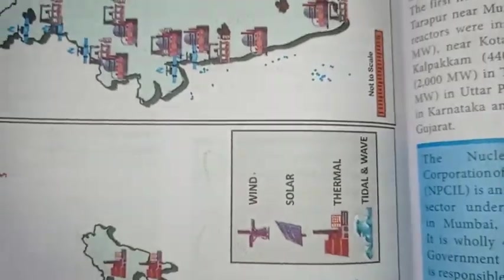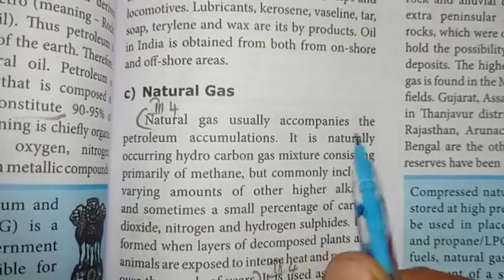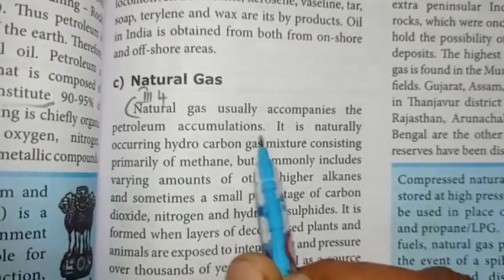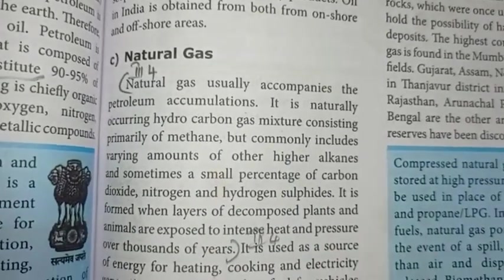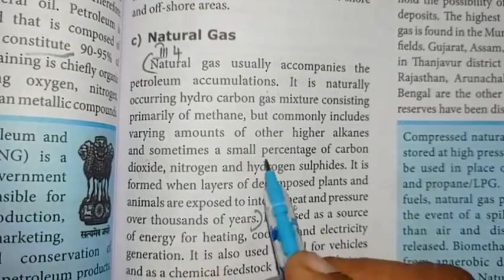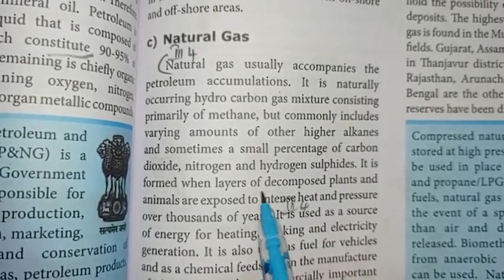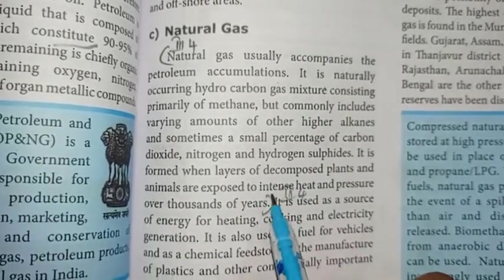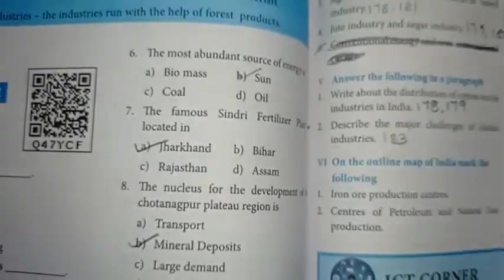Fourth one: what is natural gas? Page number 175. Natural gas usually accompanies petroleum accumulations. It is a naturally occurring hydrocarbon gas mixture consisting primarily of methane but commonly includes varying amounts of higher alkanes and sometimes a small percentage of carbon dioxide, nitrogen and hydrogen sulfides. It is formed when layers of decomposed plants and animals are exposed to intense heat and pressure over thousands of years.